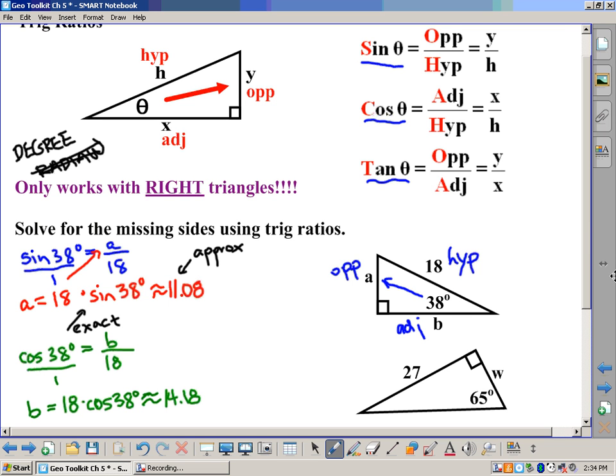Finally, down here, we've got another triangle. And in this case here, we've got 65 degrees. Opposite it is 27. So that's the opposite. This over here is the adjacent side. That's W. And this is the hypotenuse down here.